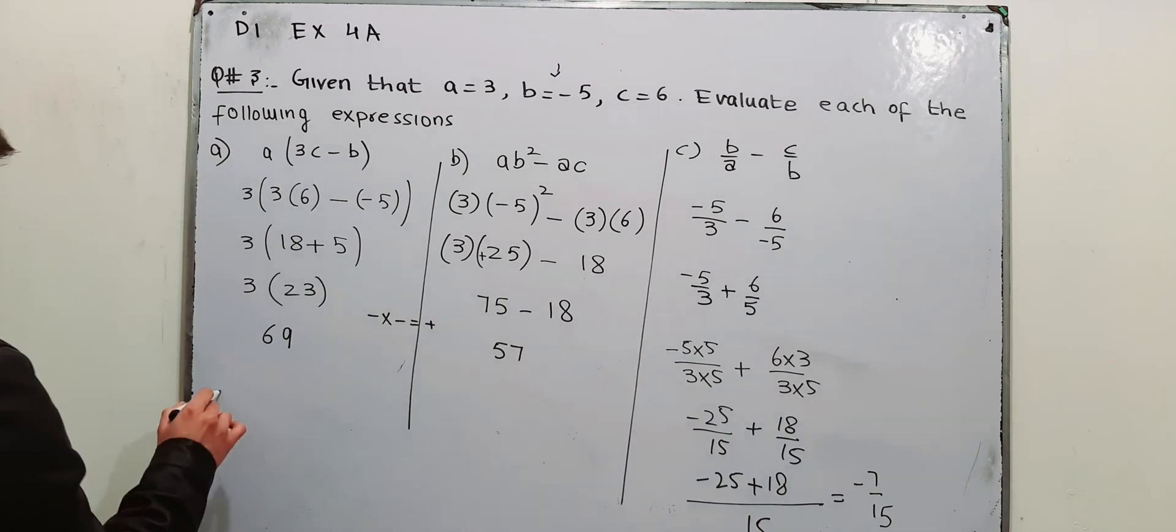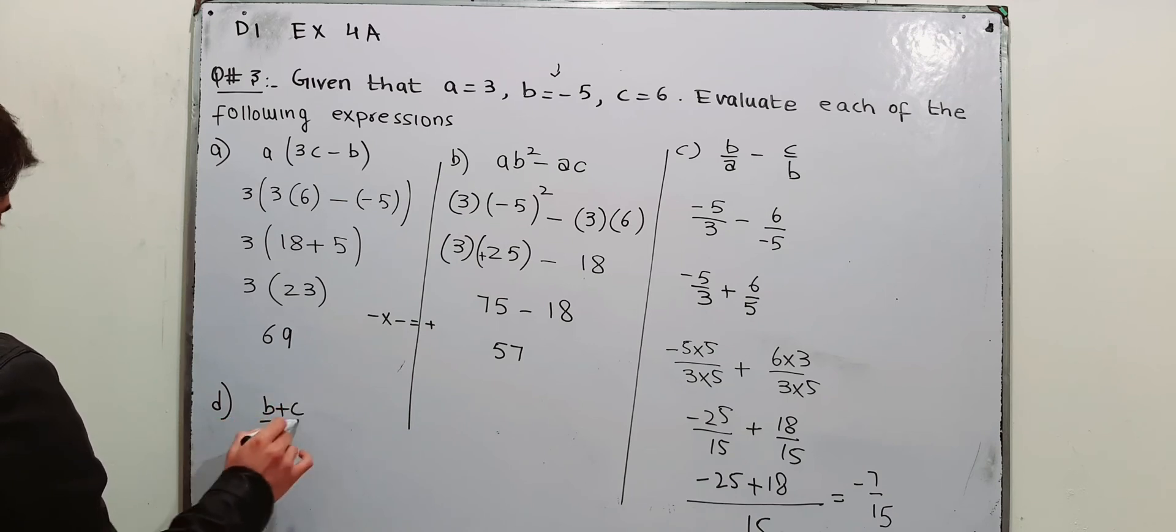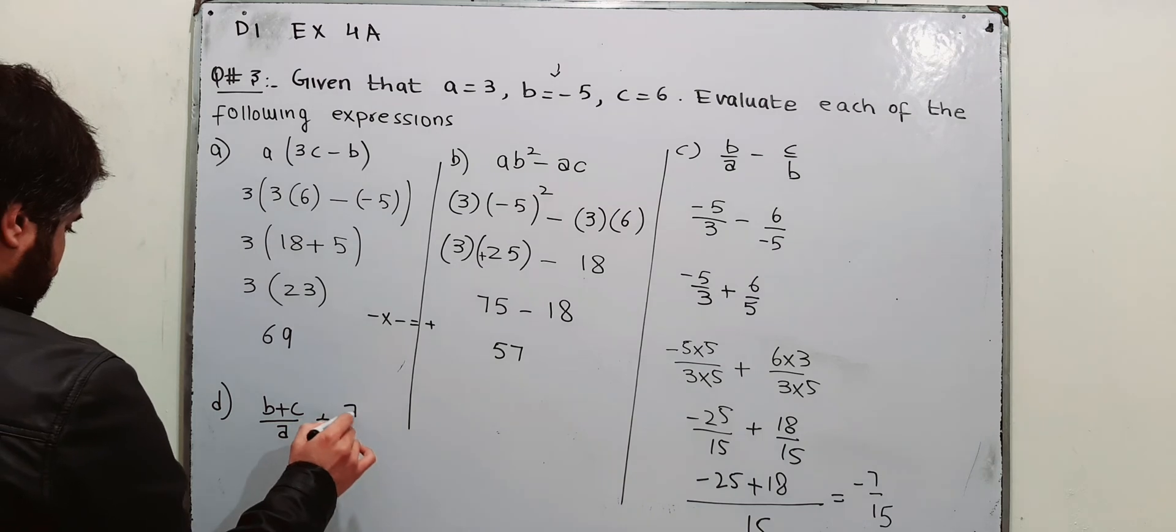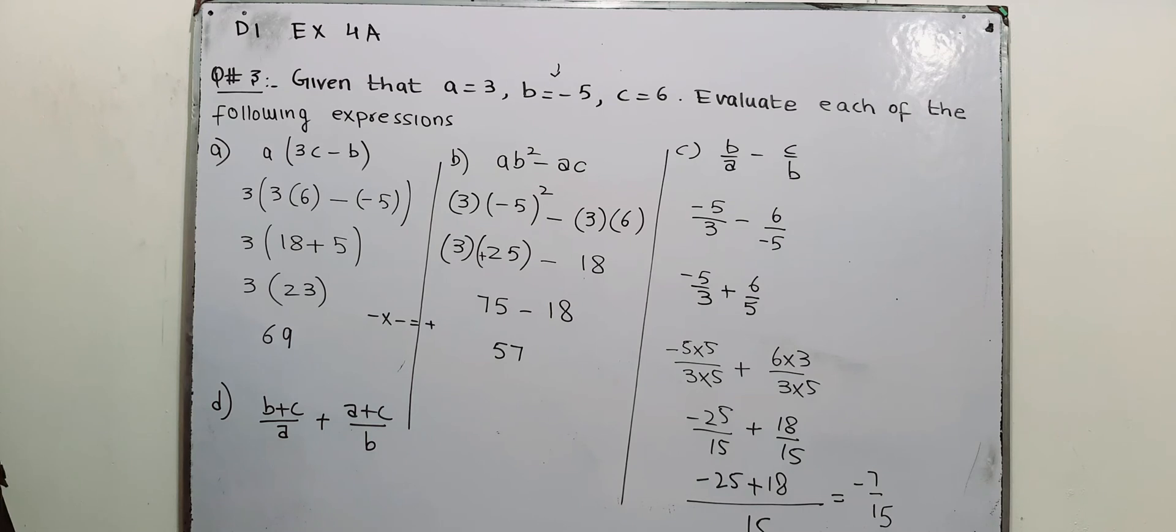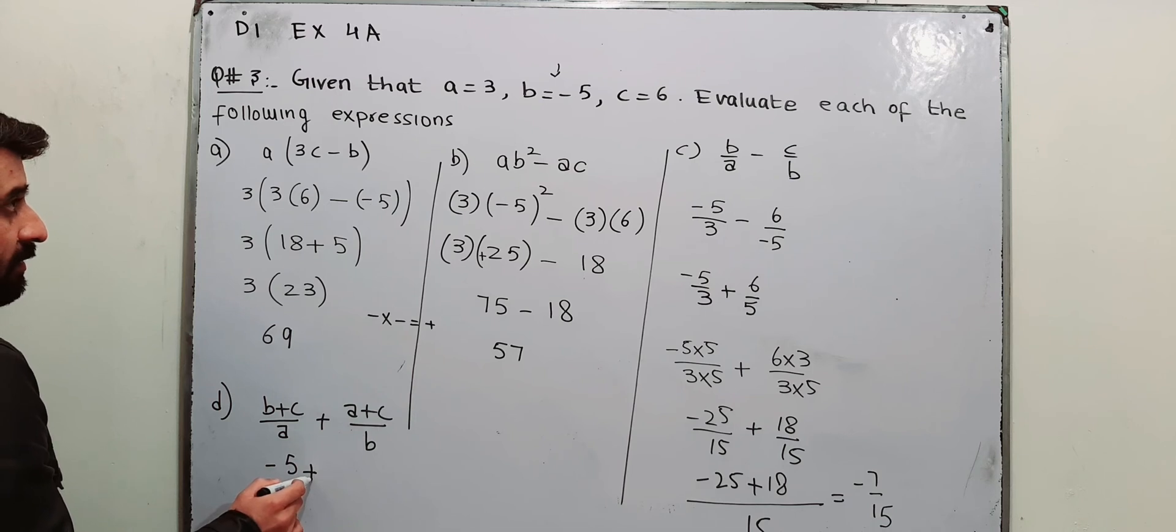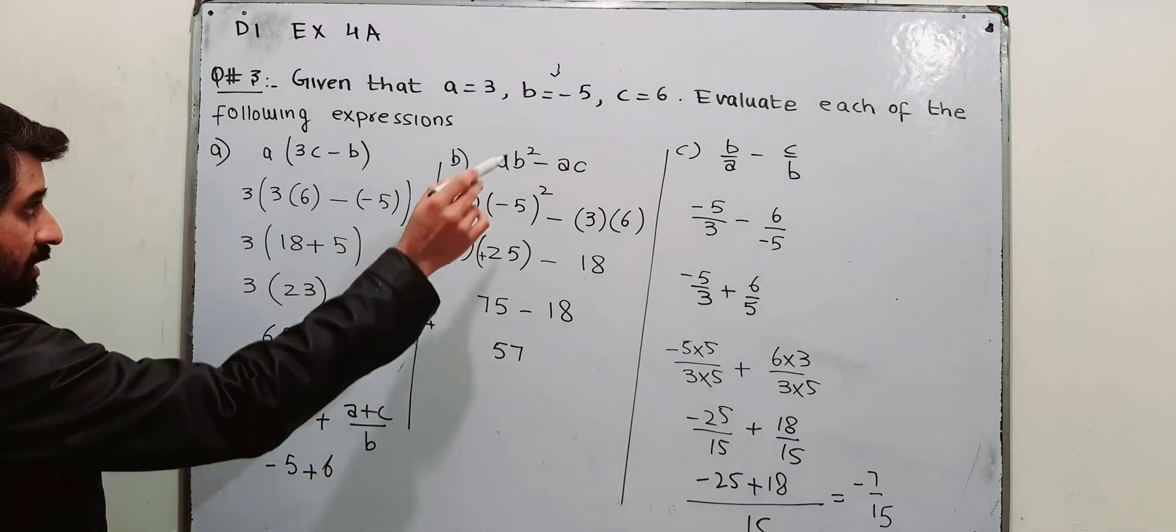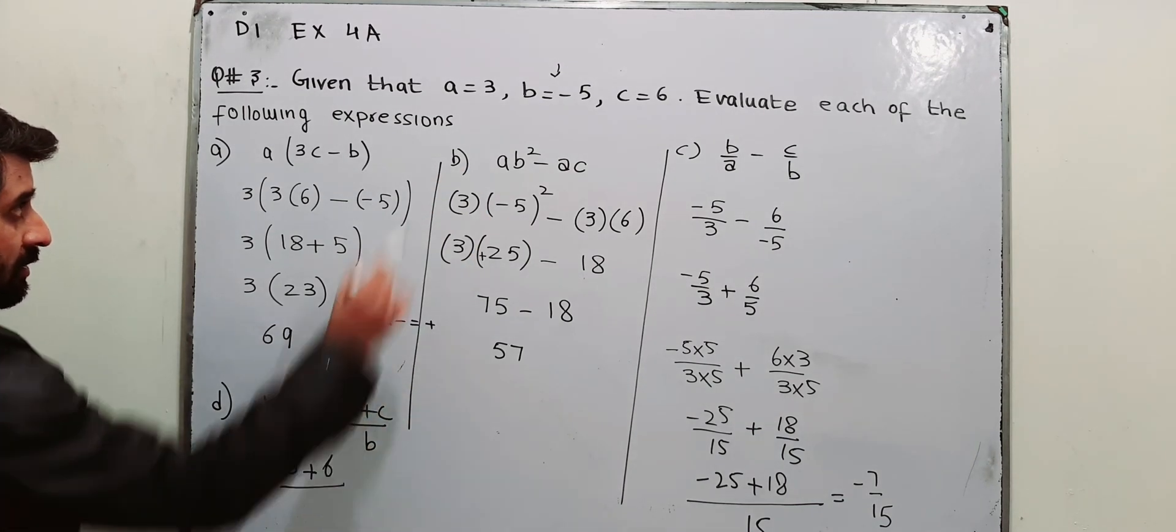Then we have part number D of the same question. (B + C)/A + (A + C)/B. First of all, insert the values of A, B and C. B is minus 5, C is 6, A is 3.